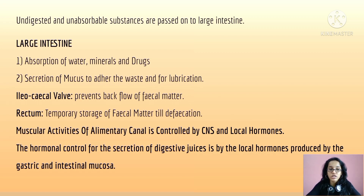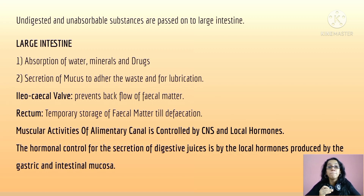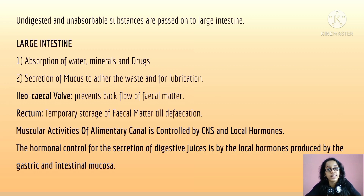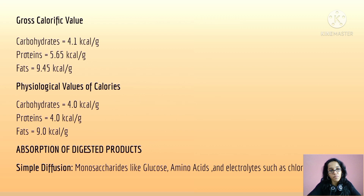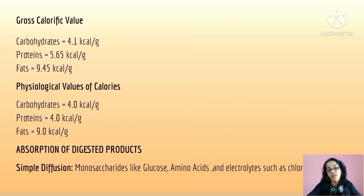Undigested and unabsorbed substances pass to the large intestine, where absorption of water, minerals, and drugs occurs. Mucus secretion helps to adhere waste and provides lubrication. The ileocecal valve prevents backflow of fecal matter, and the rectum is the temporary storage of fecal matter until defecation. Muscular activity of the alimentary canal is controlled by the central nervous system and local hormones, which also regulate secretion of digestive juices.